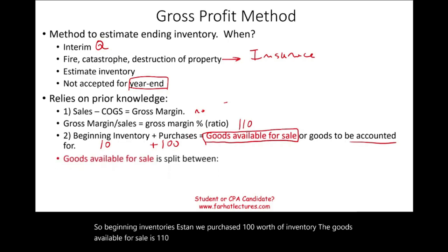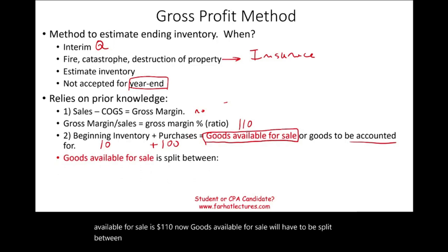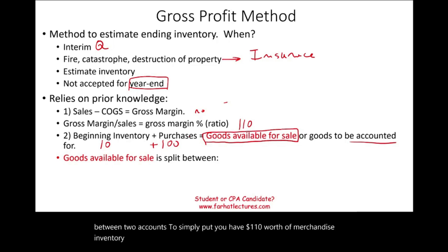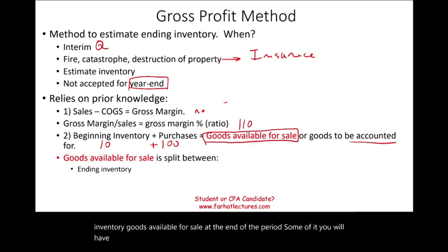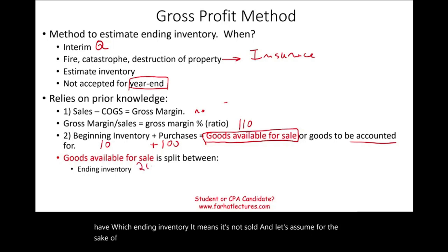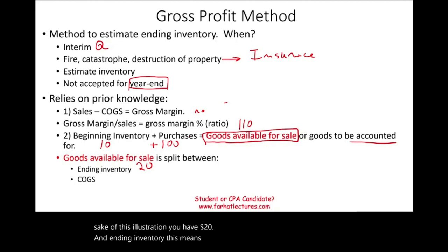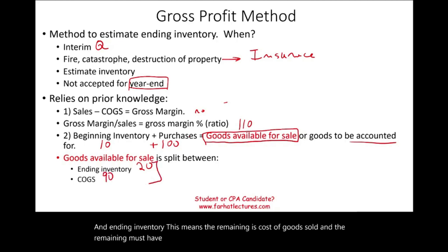Goods available for sale must be split between two accounts. You have $110 worth of merchandise — goods available for sale. At the end of the period, some of it you will still have on hand, which is ending inventory — meaning it's not sold. Let's assume $20 in ending inventory. That means the remaining $90 is cost of goods sold, because $90 plus $20 equals $110.